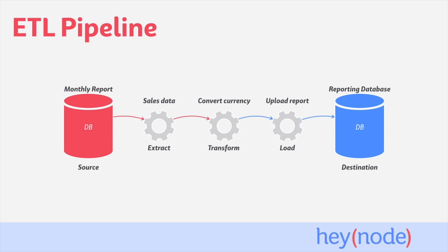The monthly report will be the source of the data for each store. You'll extract the sales data from each report and then convert all the sales and revenue values to a base currency, as well as do any other cleaning and normalizing of the data that's required. Finally, you'll take the standardized report and load it into a reporting database that can then be used to analyze the reports altogether. This is just one example of how to use an ETL pipeline to solve this particular problem.